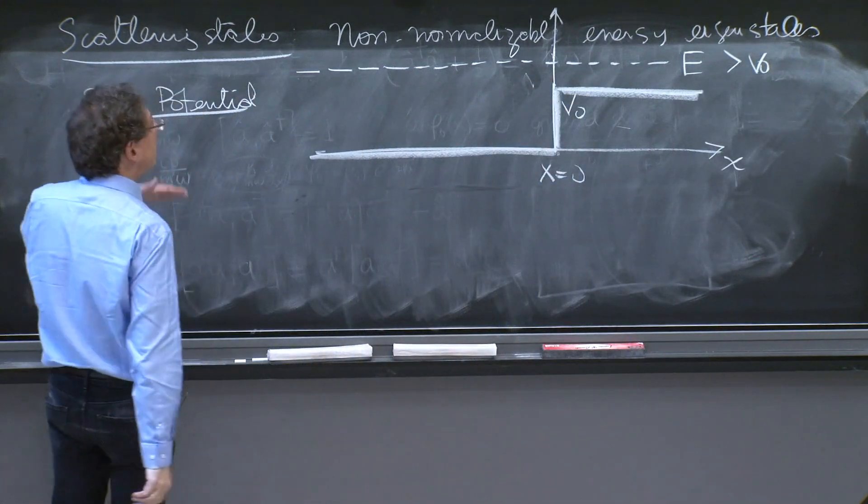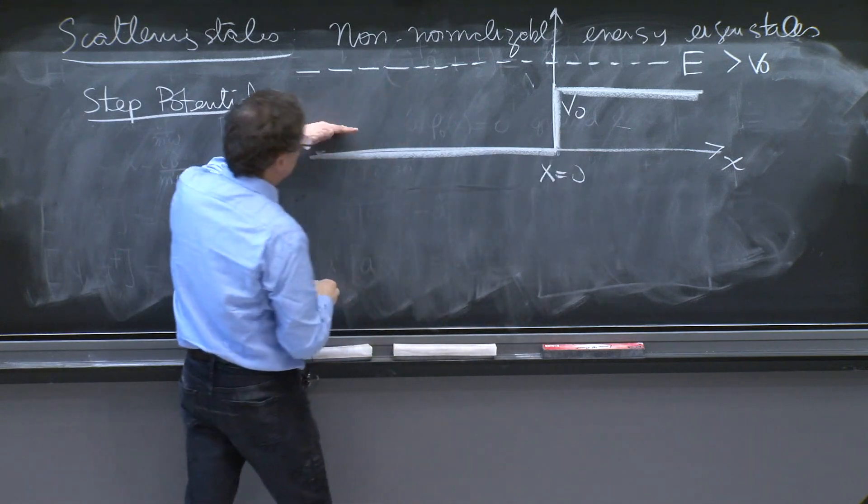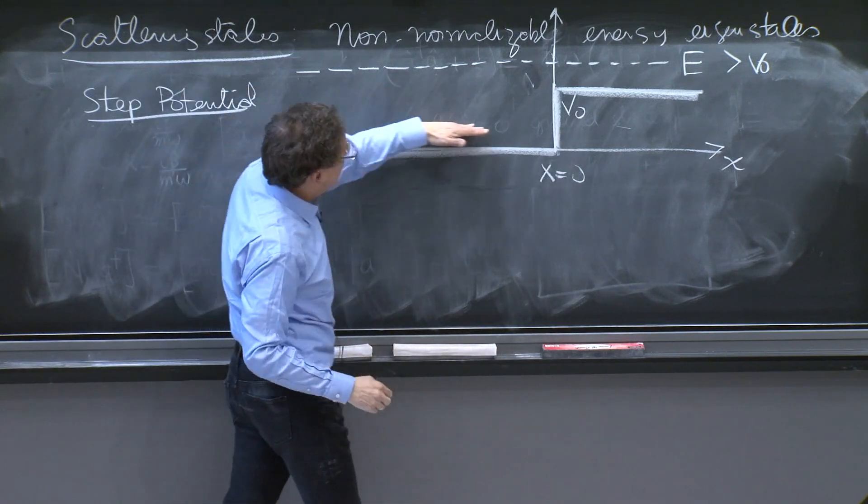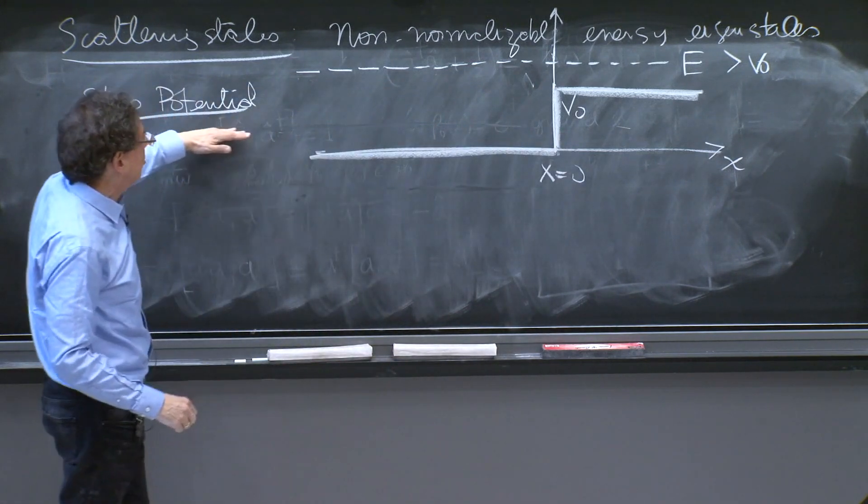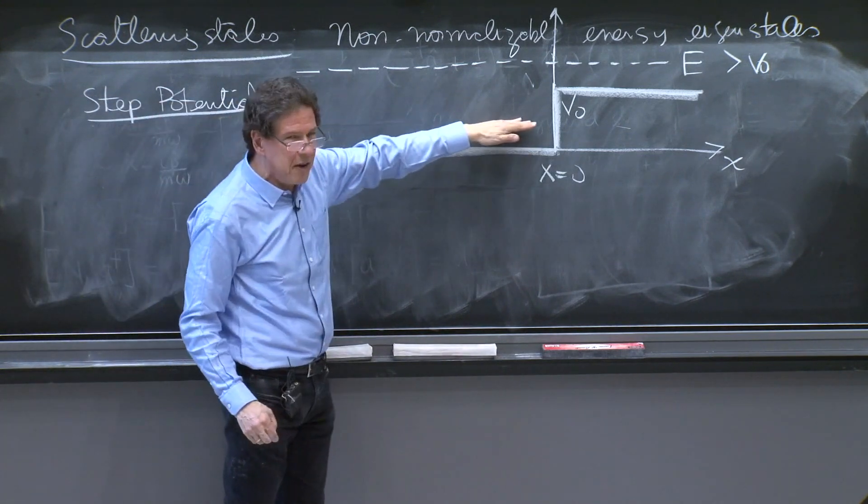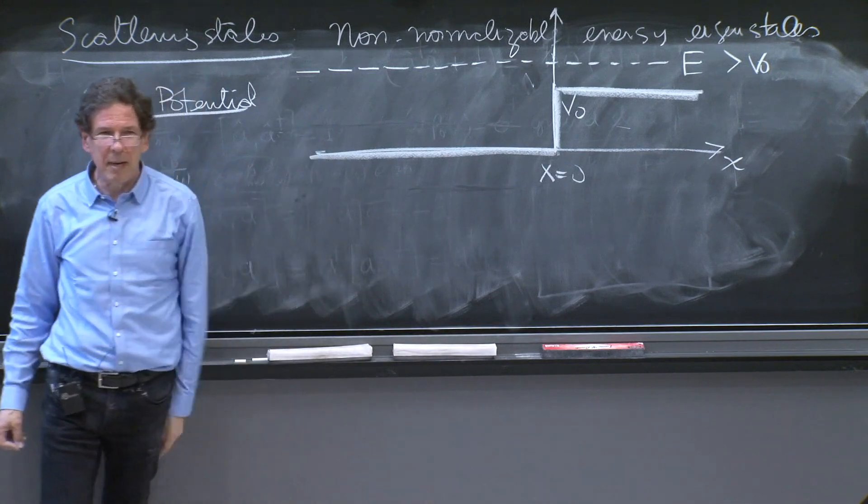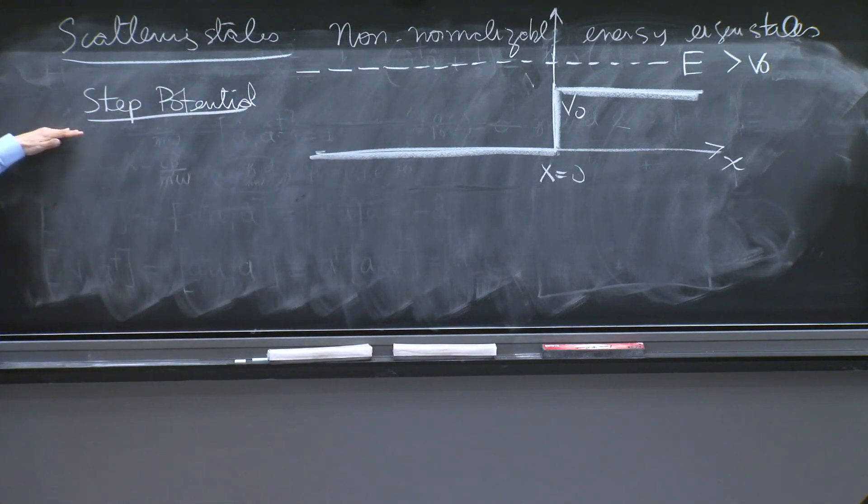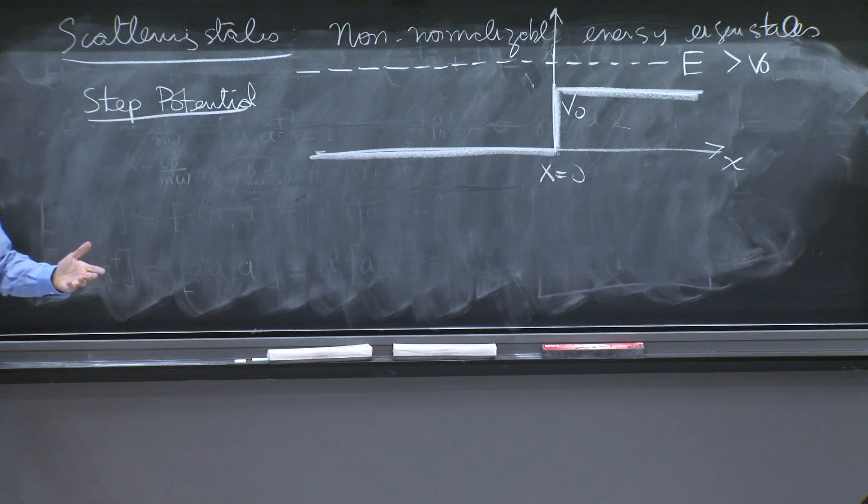But whatever is the energy, even if it's less than v0, the solution over here is going to be an exponential, or a cosine and a sine, a non-decaying function. And therefore, it can't be normalized, because it's non-decaying forever and ever. So it cannot be normalized.